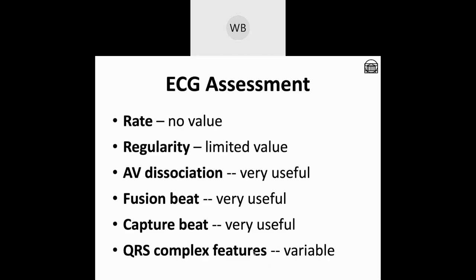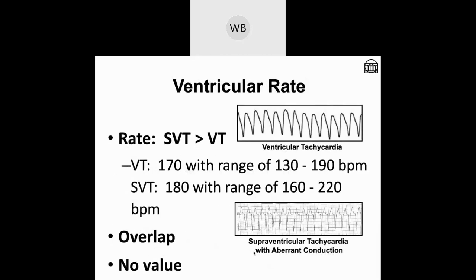We're going to have to look at the electrocardiogram. Starting with rate—rate isn't very helpful. SVT with aberrant conduction tends to be a little faster than VT, but look at the overlap: 130 to 190 beats per minute for VT, and 160 to 220 for SVT with aberrant conduction. There's way too much overlap, so there's no way to make a distinction between the two rhythm categories strictly based on rate.